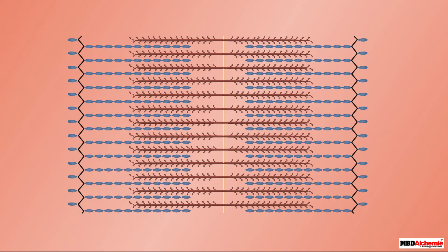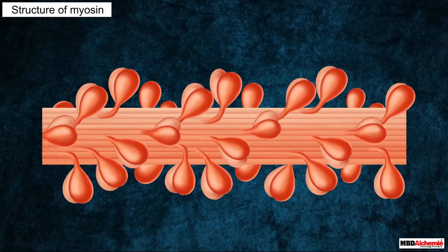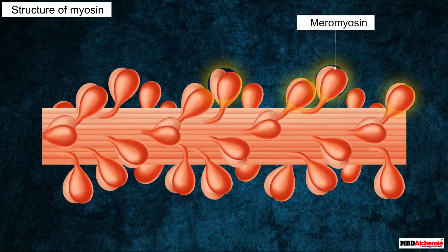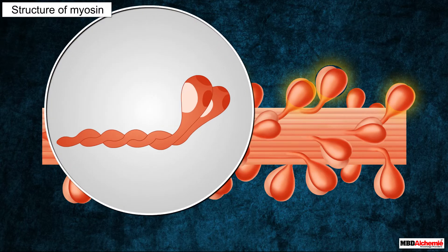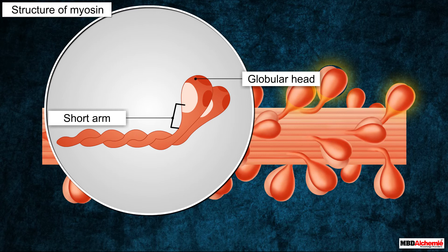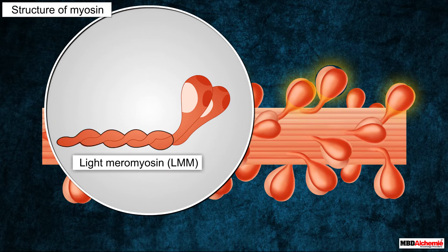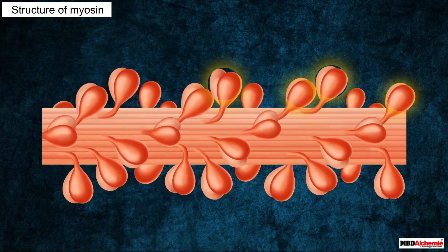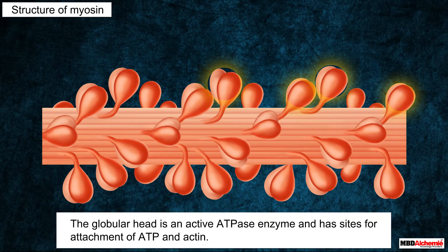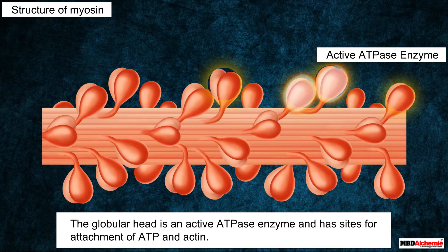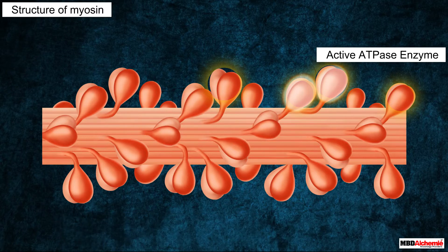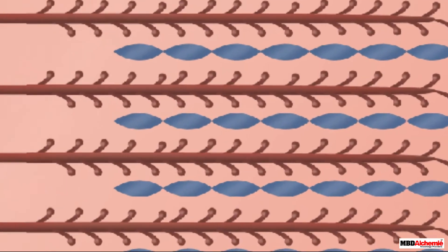Let us now move inside the A band to learn more about the myosin protein. Each myosin or thick filament is a polymerized protein composed of many monomeric proteins called meromyosins. Each meromyosin has two parts: a globular head with a short arm called the heavy meromyosin (HMM), and a tail called the light meromyosin (LMM). The HMM component projects outwards at a regular distance and angle from the surface of the myosin filament and is known as the cross arm. The globular head is an active ATPase enzyme and has binding sites for ATP and actin.